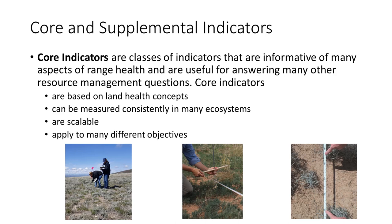Examples of terrestrial core indicators for the Bureau of Land Management's Assessment Inventory and Monitoring Program include vegetation composition, cover and presence of plant species of management concern, cover and presence of invasive species, vegetation height, canopy gaps, and plant species diversity. Similar core indicators have been developed for aquatic systems as well as lentic and riparian areas.